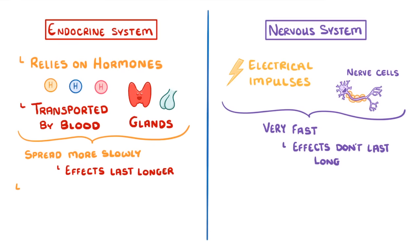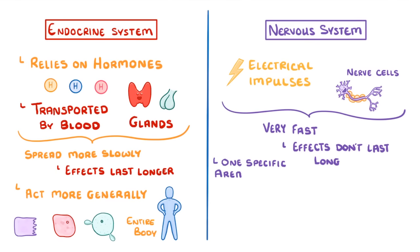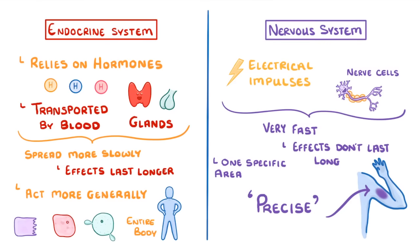The other point is that hormones act more generally. As we said earlier, they spread through the entire body, which means that they interact with loads of different cells. In contrast, nerve impulses are sent to one specific area, such as the particular muscle that we need to move our arm. So we often describe the nervous system as being precise.